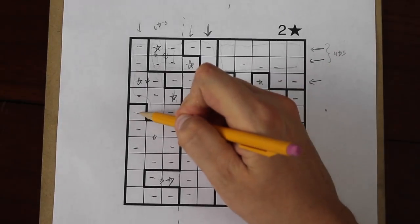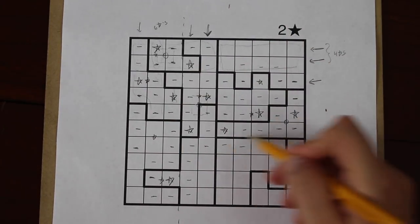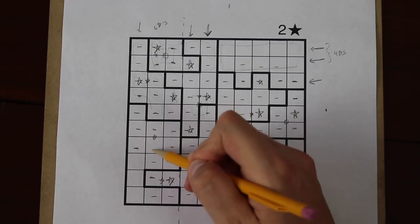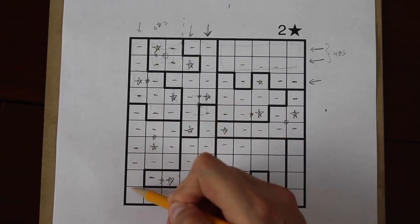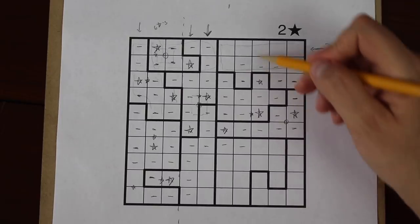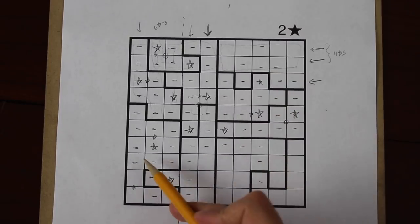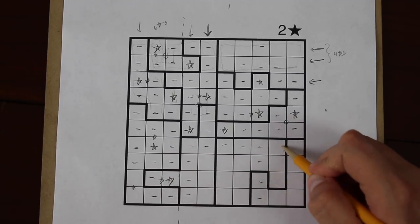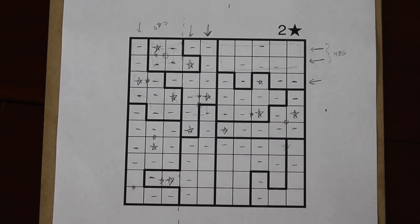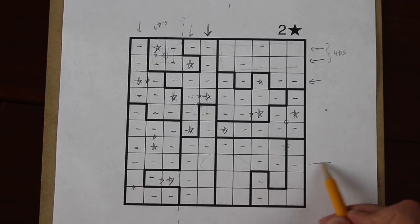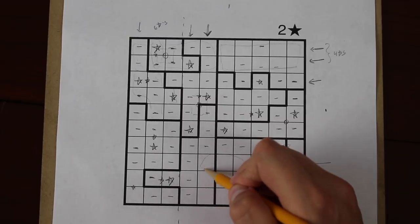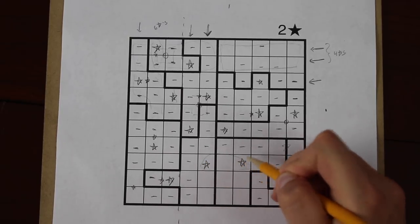We can start to make lots of deductions very quickly. There's two stars in this row. This star must go here. There's two stars now in this column. There's only two spaces left where a star can go here. Now there's only three spaces left where a star can go in this row, but we still need to fit two stars into it. There's only one way that can work if they're separated.